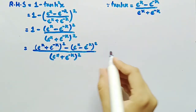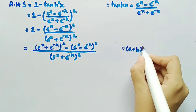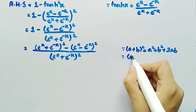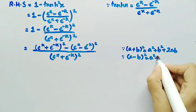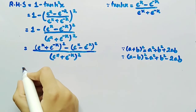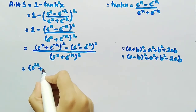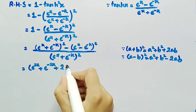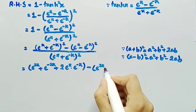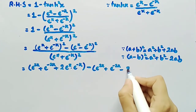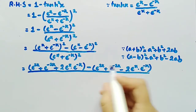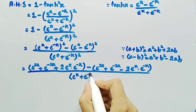For these two terms, we will use the formulas: (a+b)² equals a² plus b² plus 2ab, and (a−b)² equals a² plus b² minus 2ab. By using these two formulas, we can write the numerator as (e²ˣ plus e⁻²ˣ plus 2·eˣ·e⁻ˣ) minus (e²ˣ plus e⁻²ˣ minus 2·eˣ·e⁻ˣ), all divided by (eˣ plus e⁻ˣ)².